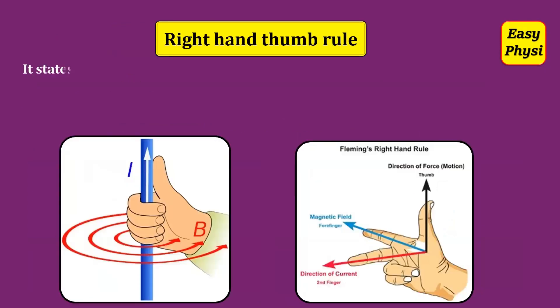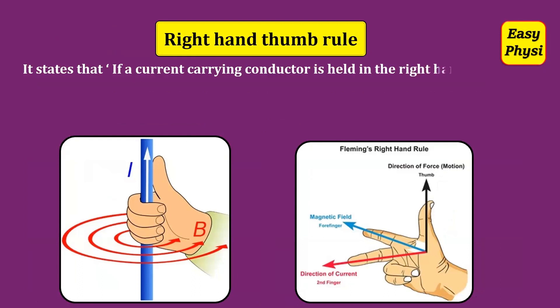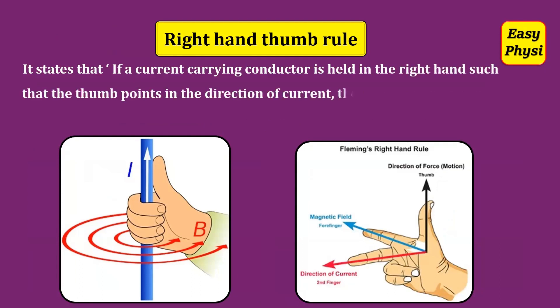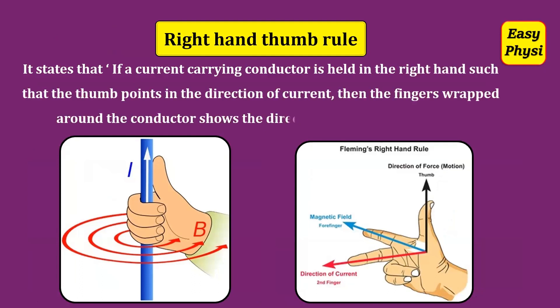Right Hand Thumb Rule: It states that if a current-carrying conductor is held in the right hand such that the thumb points in the direction of current, then the fingers wrapped around the conductor show the direction of the magnetic field.